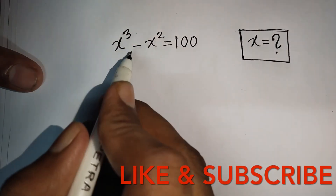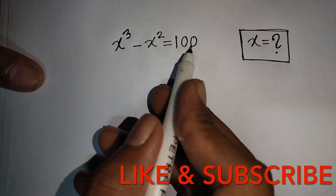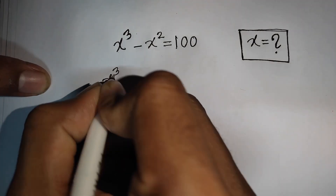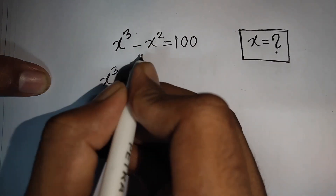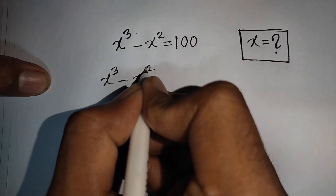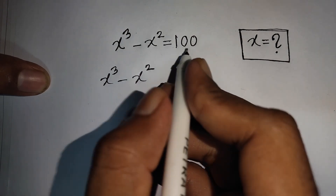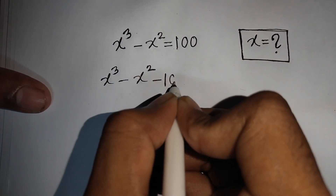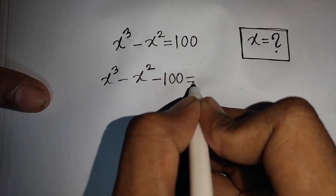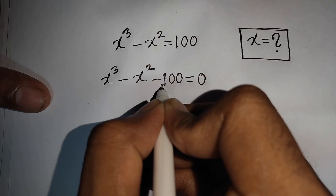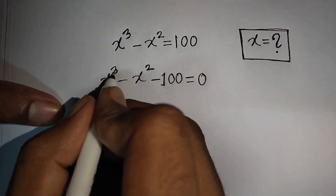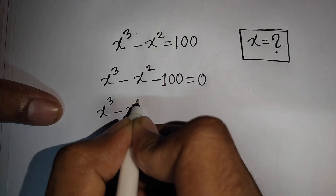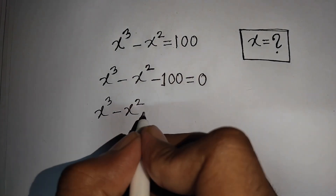How to solve x³ - x² = 100 for x. We have x³ minus x², then bring 100 to the left side so it becomes minus 100, equal to 0. Now we have x³ minus x² minus 100.